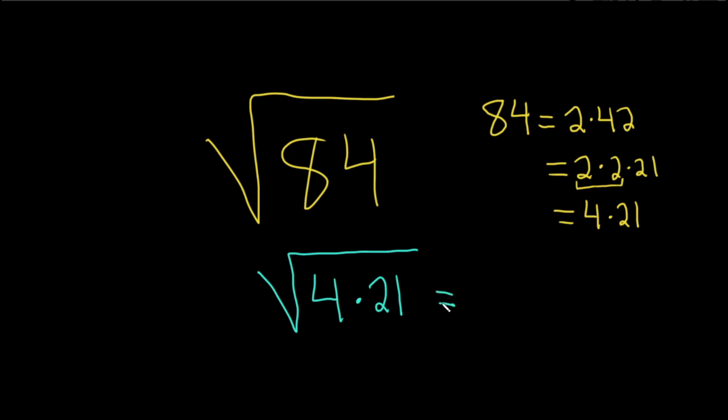And so this is equal to, well we can break it up into two square roots: square root of 4, square root of 21. And the square root of 4 is 2, so this will just be 2 times the square root of 21. And that'll be the final answer.